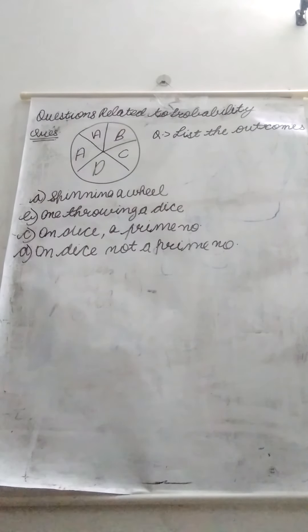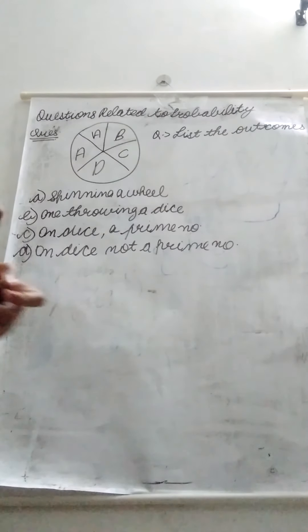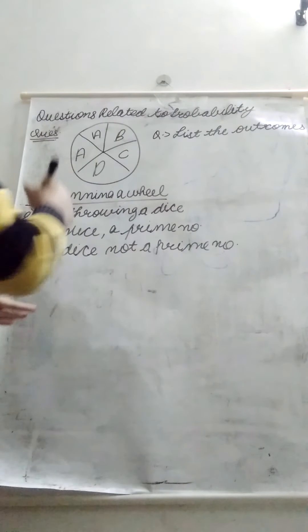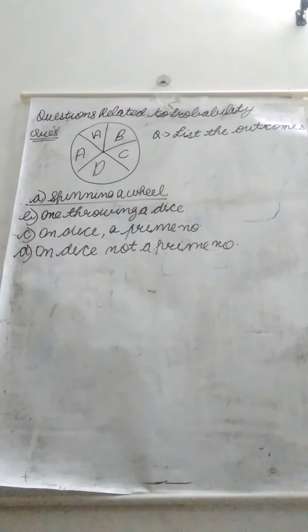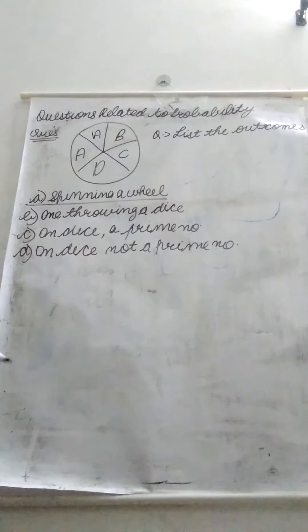So here we have a question. The question is list the outcomes. Question A is related to this wheel. So we have given some alphabets in this wheel. When we spin this wheel, there will be some outcomes that we have to tell.